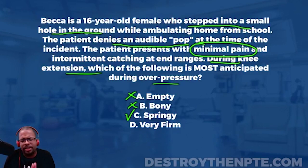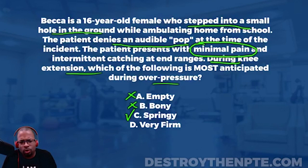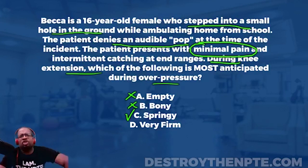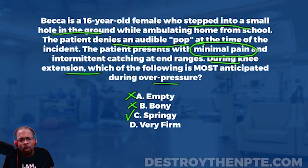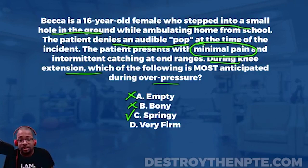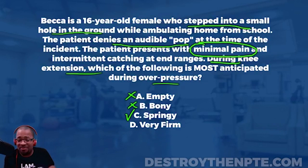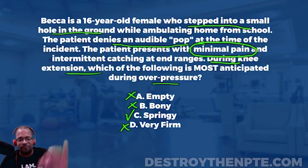Option D is very firm end feel, which you can get with a capsular stretch. You might feel that with general knee extension, but when a patient has a meniscal tear with intermittent catching at end ranges, would I expect a capsular stretch feel? No. A hard capsular end feel is more consistent with frozen shoulder — and I'm definitely not expecting that here. So X next to D. Our final answer is C: springy end feel. Congratulations to those who got it correct.